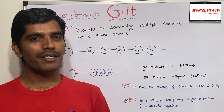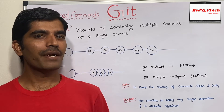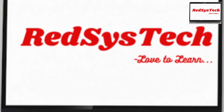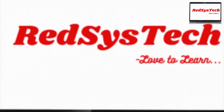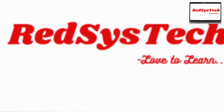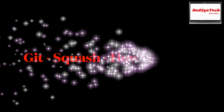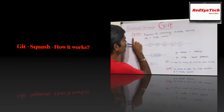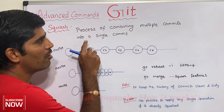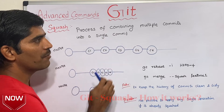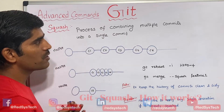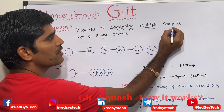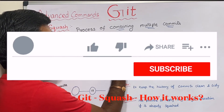Squashing is very rarely used in our projects, but it is just to understand how it actually works. Squashing is nothing but the process of combining multiple commits into a single commit.